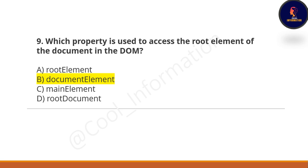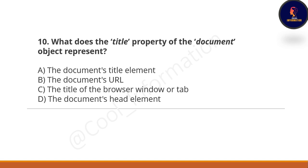Next question: What does the title property of the document object represent? Option A: the document title element. Option B: the document's URL. Option C: the title of the browser window or tab. Option D: the document's head element. The correct option is C — the title of the browser window or tab.